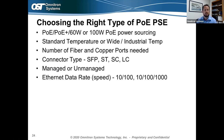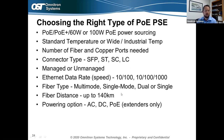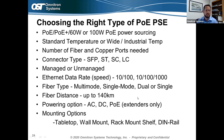Also consider the Ethernet data rate — 10/100 Mbps or up to 10/100/1000 Mbps — and the fiber type: multimode, single-mode, dual fiber, or single fiber. Fiber distance can be anything up to 140 kilometers; longer distances typically run over single-mode fiber. The powering option matters too — AC, DC, or powered from another PoE switch to power a PoE extender. Finally, consider mounting options: tabletop, wall mount, rack mount, or DIN rail. This list of questions is a great reference for choosing the right PoE device.